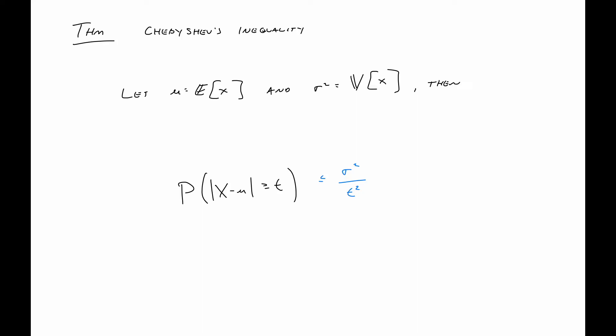In that case, if we look at this probability that the distance between X and mu is greater than some value t, that is at most sigma squared over t squared. What I'll write instead is a quick proof of that. We'll simply start with the left hand side, that is the probability that the distance is bigger than some value t.